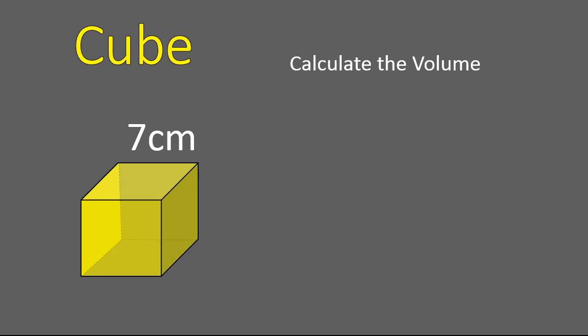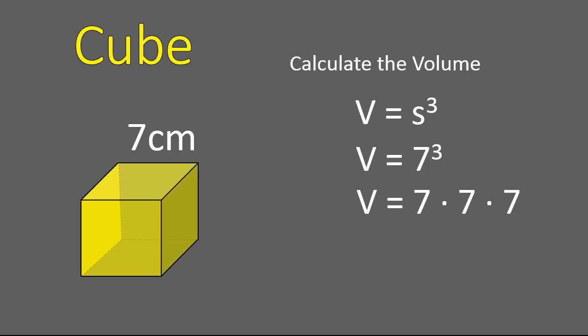Now it's your turn. Calculate the volume of this cube — the yellow cube you see here. The equation for volume is: volume is the side to the power of three. In this case, that side measurement is seven. So it would be seven to the power of three — seven times seven times seven — which gives 343 cubic centimeters. That's how many cubes would fit inside this larger cube that is seven centimeters by seven centimeters by seven centimeters.